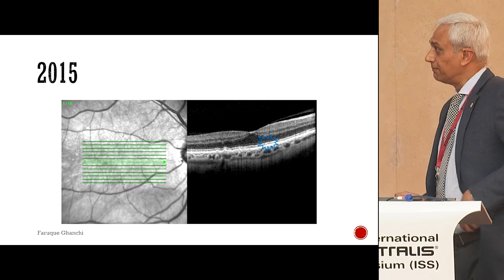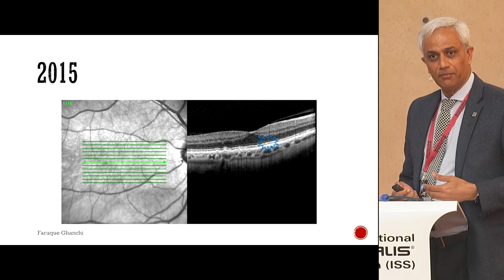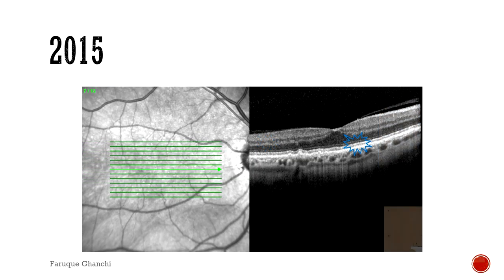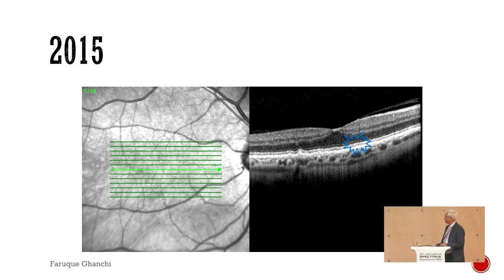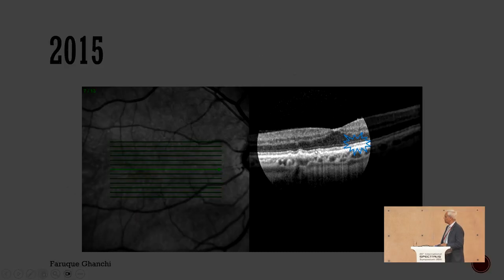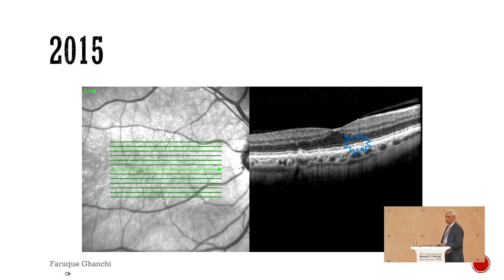Here is an example of a case we have been following up in our clinic for a while, starting back in 2015. You can see there are a few tiny drusen, but then there's something else going on on the other side of the fovea — not very obvious, but there are some changes: salt and pepper, early changes that we can see.